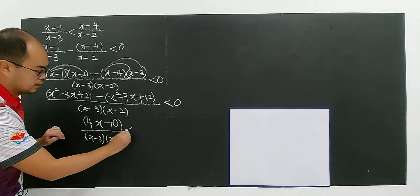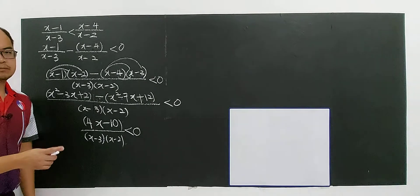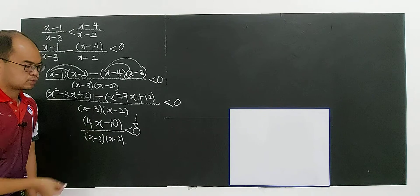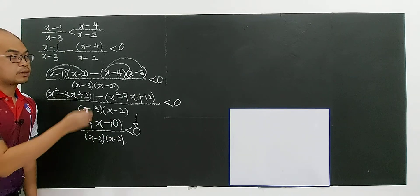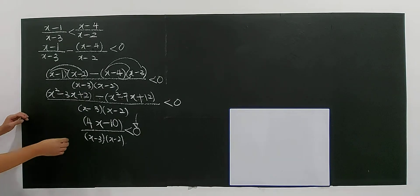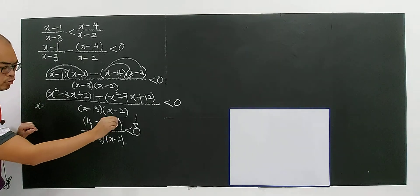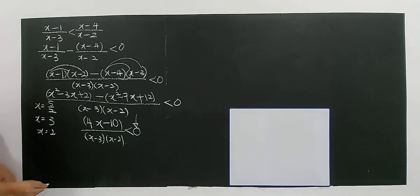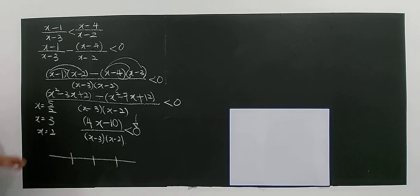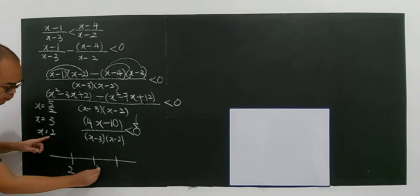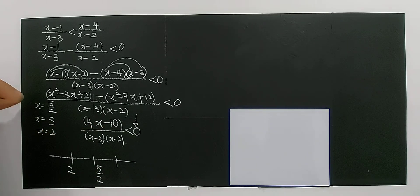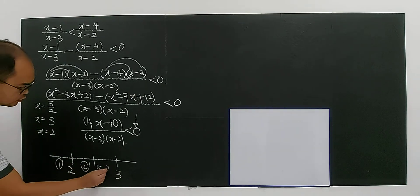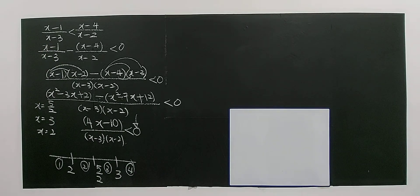Everything has now become a linear factor. The expression is 4x minus 10, divided by x minus 3 times x minus 2, less than zero. The coefficients of x are all positive, so there's no need to modify anything. Now identify the critical points: 4x minus 10 equals zero gives x equals 5 over 2, and the denominators give x equals 3 and x equals 2. On the number line you have four regions separated by 2, 5 over 2, and 3.